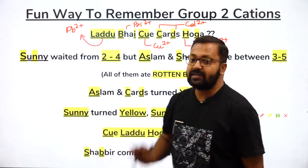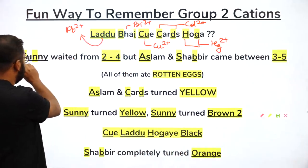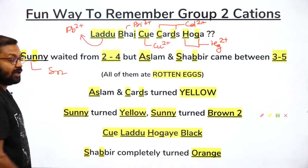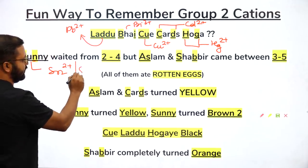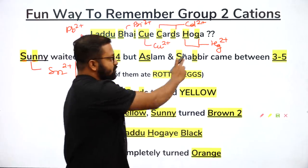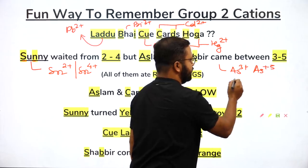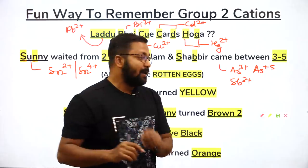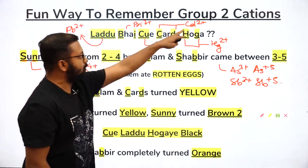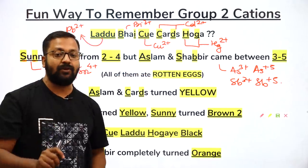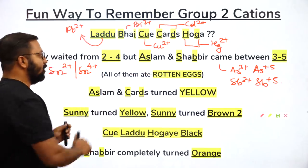For more Group 2 ions: 'Sunny weighted from 2 to 4' — underlined S and N give us Sn, tin, present in +2 oxidation state (Sn²⁺) and +4 oxidation state (Sn⁴⁺). 'Aslam and Shabir came between 3 to 5' — As³⁺ and As⁵⁺ (arsenic), and Sb³⁺ and Sb⁵⁺ (antimony). In total, there are 11 different types of ions present in Group 2.